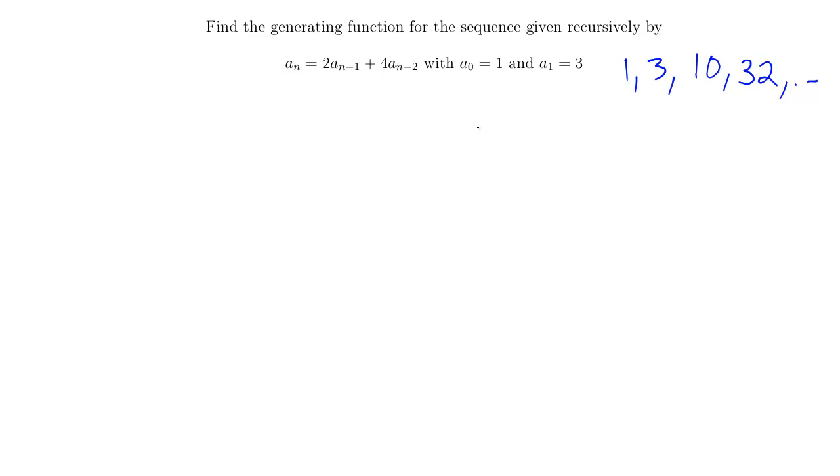That might help. It also might help, just as our side work here, to rewrite our recurrence relation as a_n minus 2a_{n-1} minus 4a_{n-2} equals 0. This might be helpful to remember.